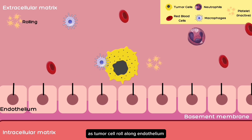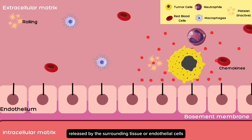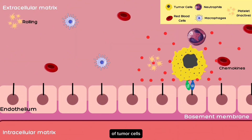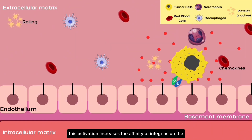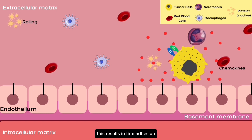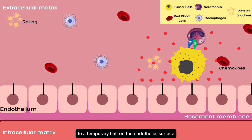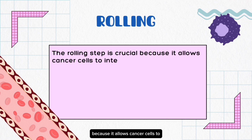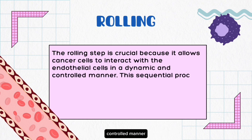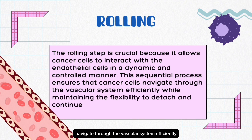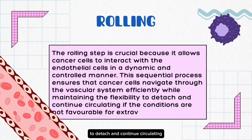As tumor cells roll along the endothelium, they encounter chemokines and other signaling molecules released by the surrounding tissues or endothelial cells. These chemokines activate integrins on the surface of tumor cells, increasing their affinity for adhesion molecules on the endothelial cells. This results in firm adhesion, bringing the cancer cell to a temporary halt on the endothelial surface. This rolling step is crucial because it allows cancer cells to interact with the endothelial cells in a dynamic and controlled manner, maintaining flexibility to detach and continue circulating if conditions are not favorable for extravasation.